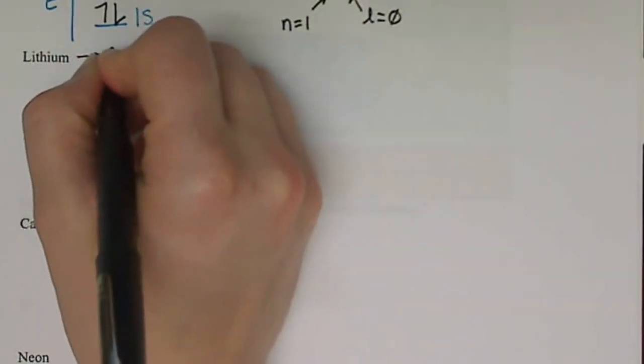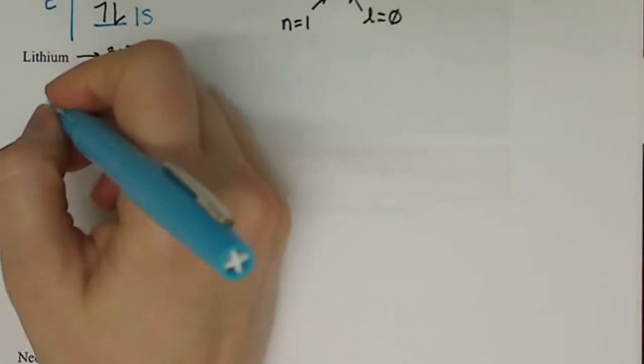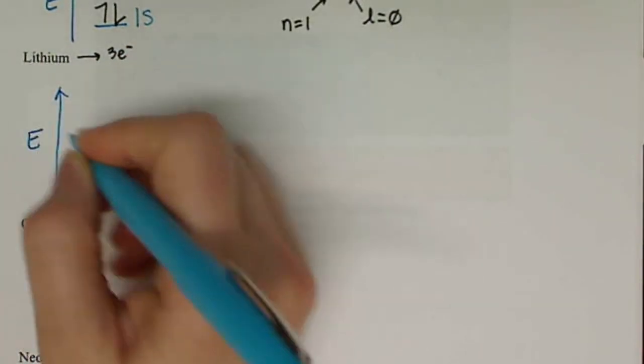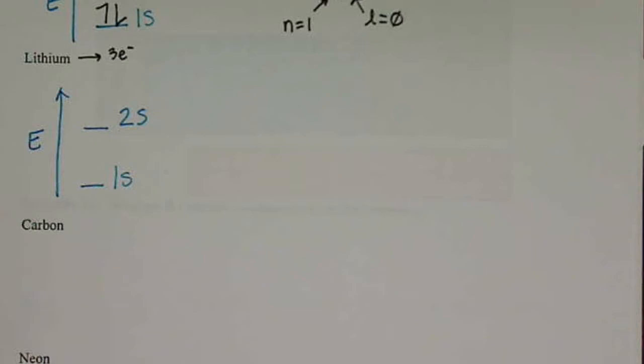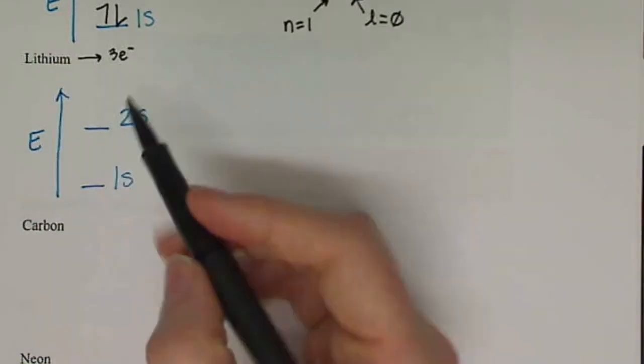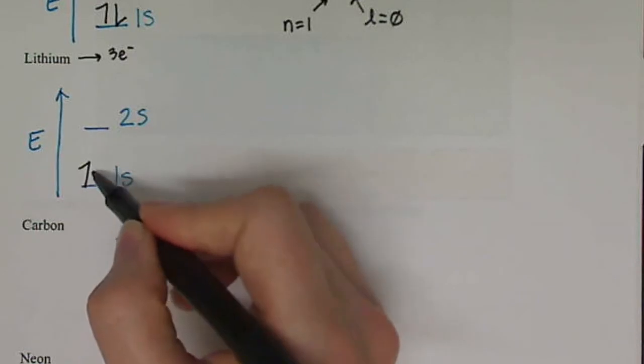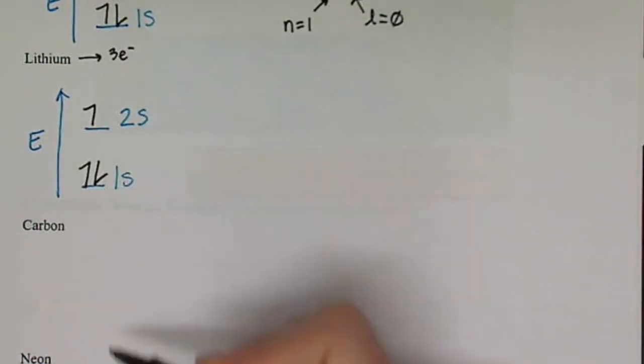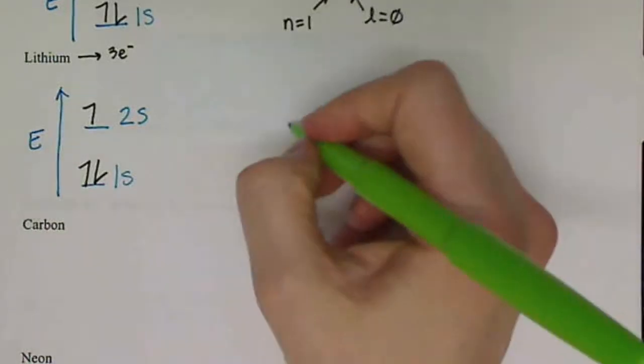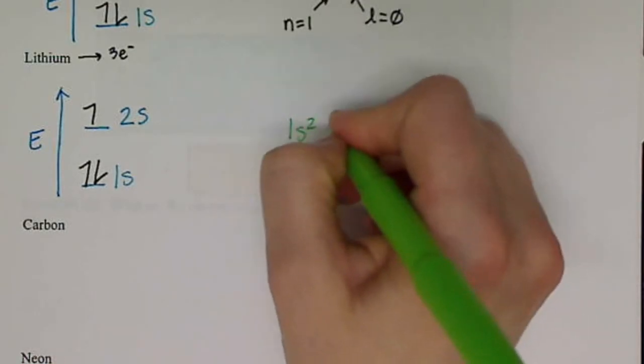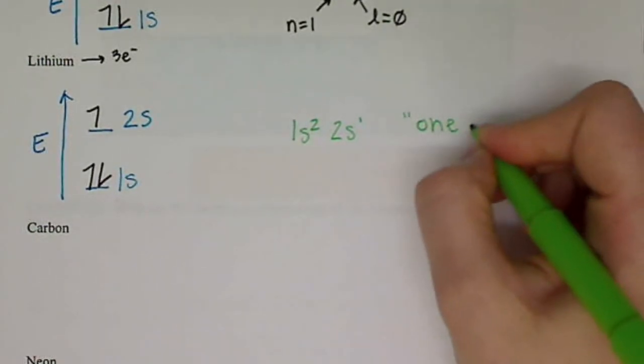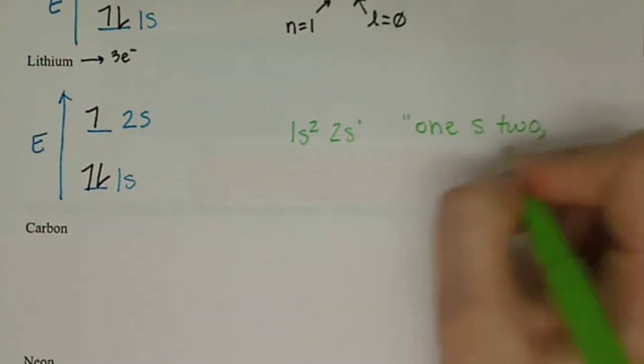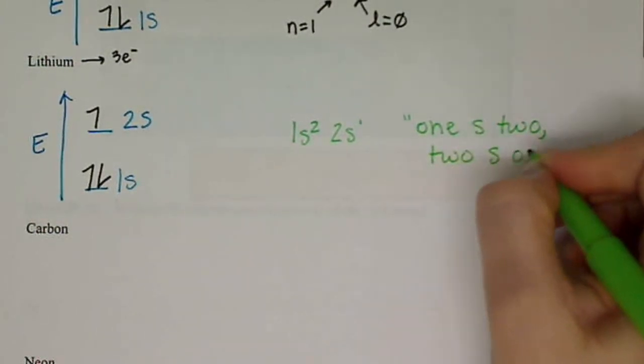So let's move on to lithium. Lithium has 3 electrons. So very exciting. We get to promote to our second energy level. We have the 1s and then the 2s. We have 3 electrons, so we want to fill from the bottom up. So we fill 1, 2, and 3. Electron configuration would be 1s2, 2s1. So if we were to read this, we have 1s2, 2s1.